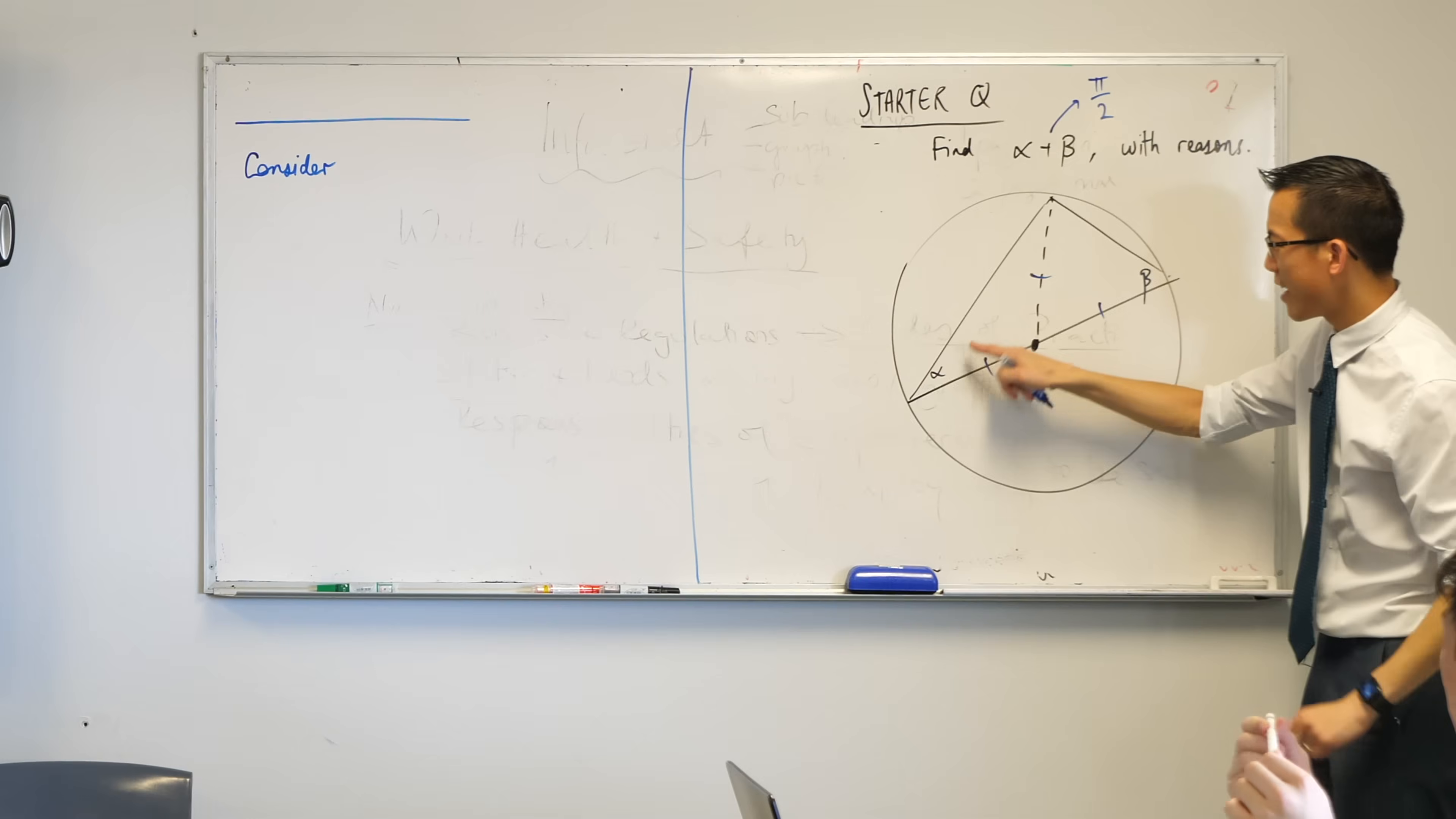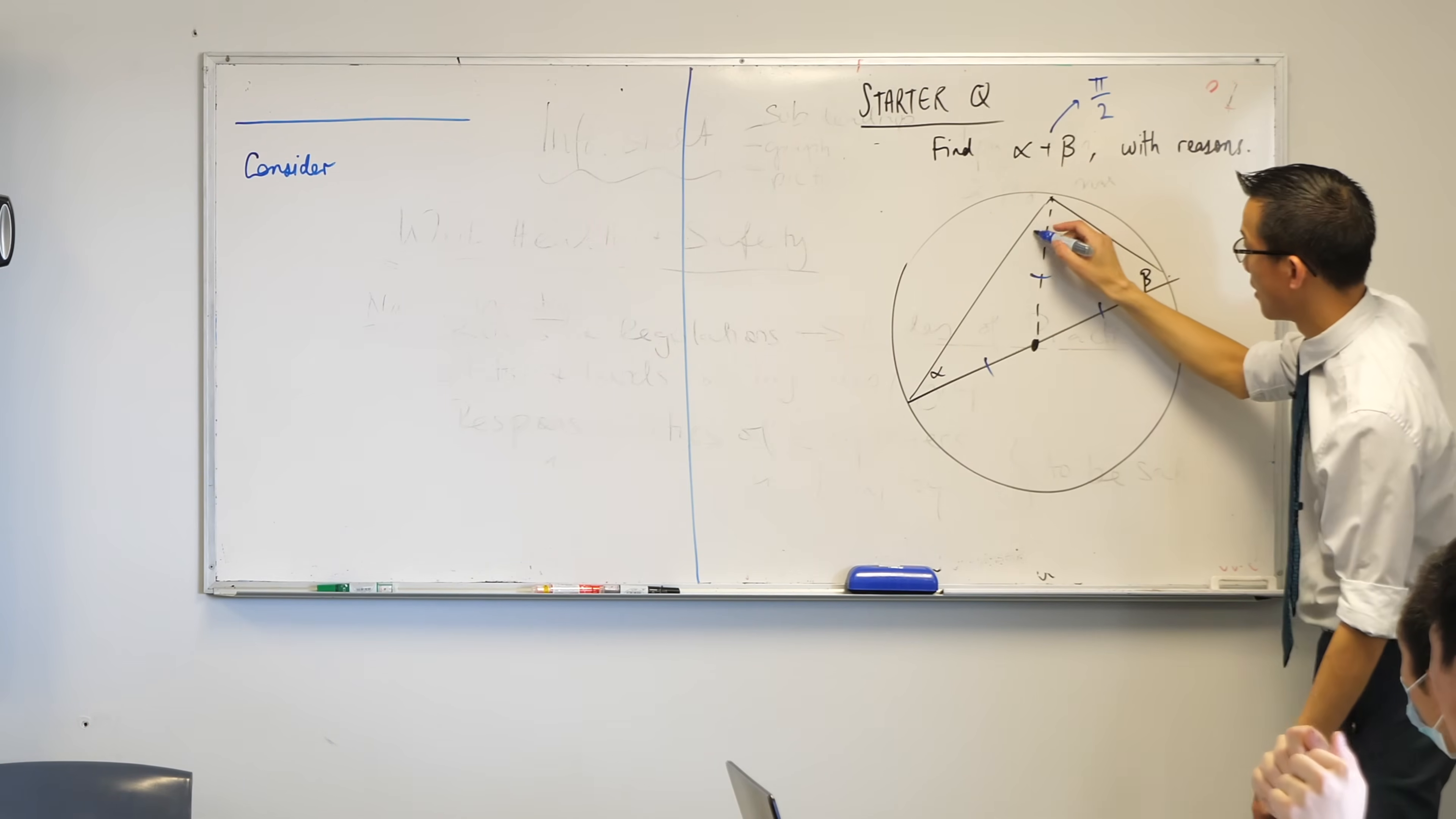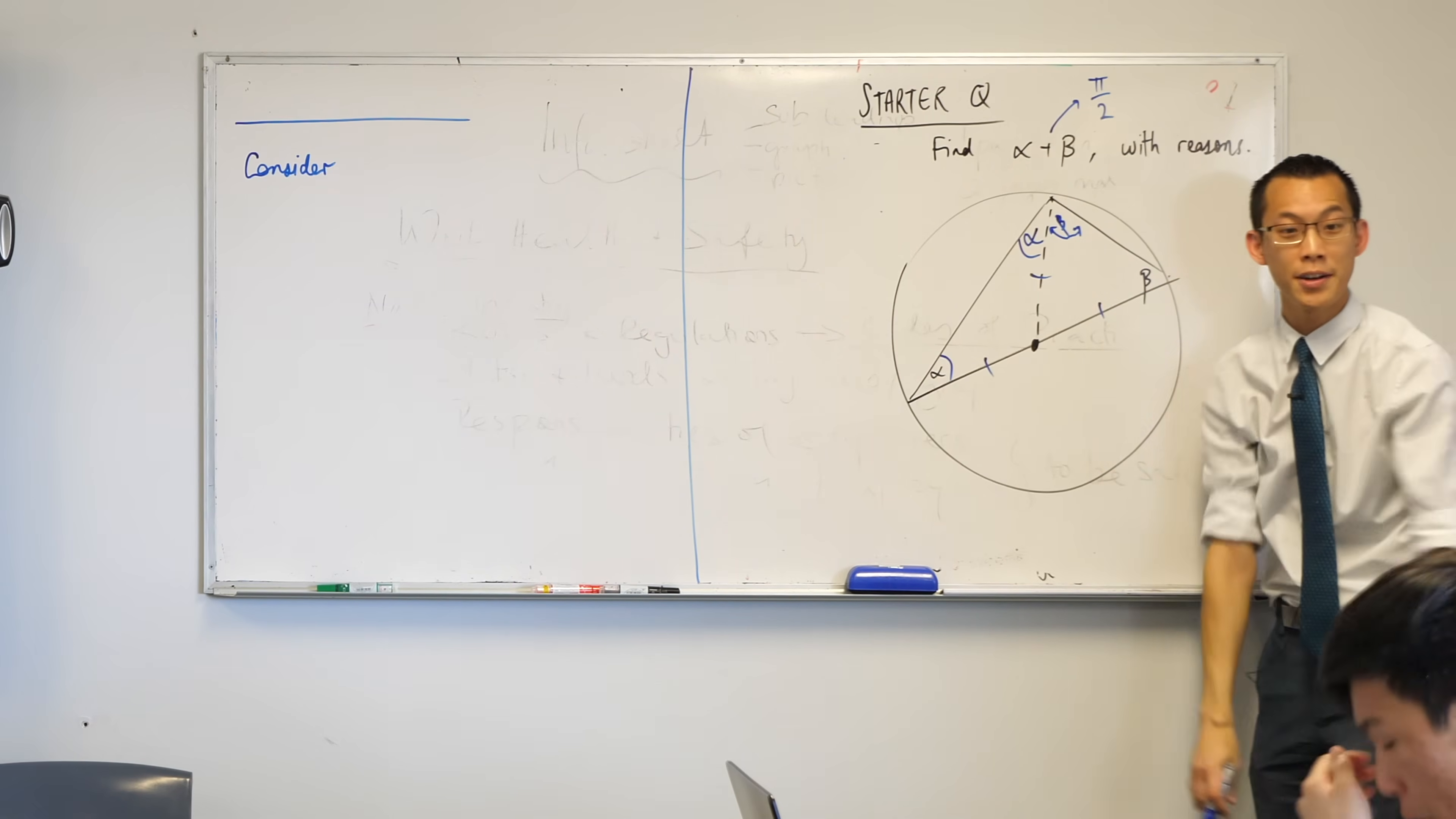If there are equal angles opposite equal sides, this angle up here, what's that? This thin one. This is alpha as well, isn't it? Because these two are opposite equal sides. And then up in this triangle, you've got beta.